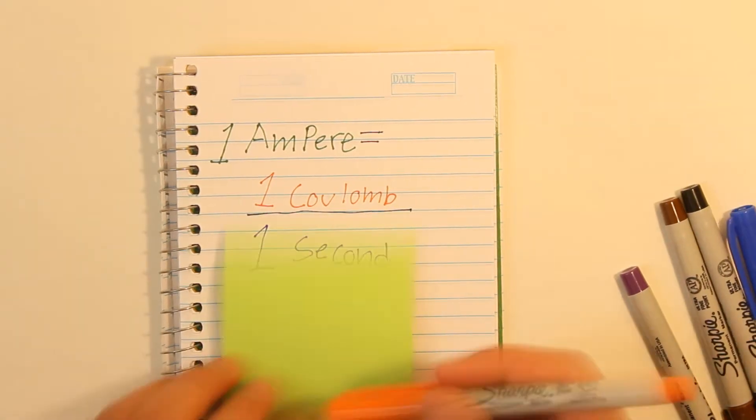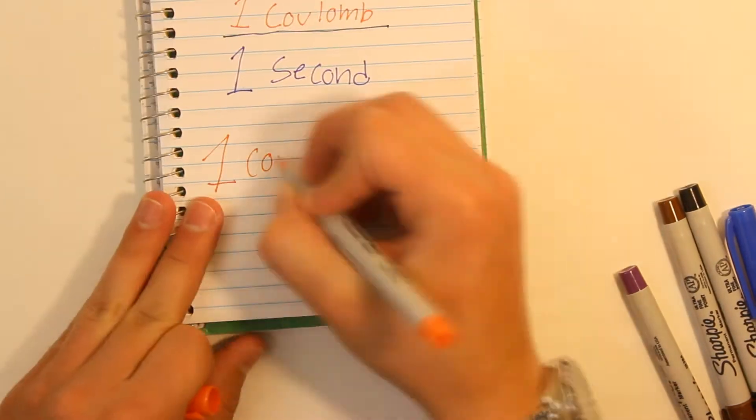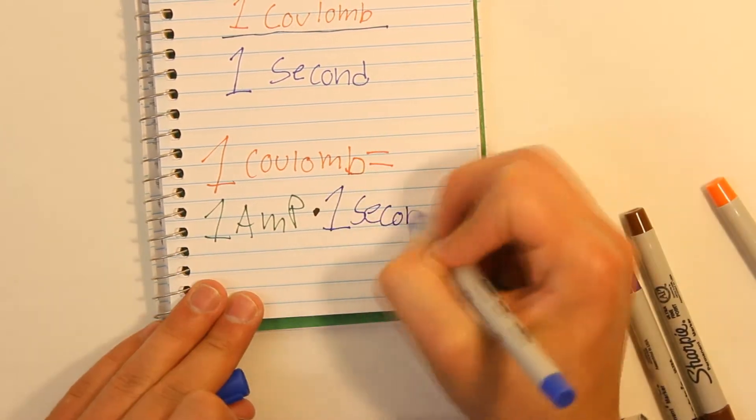That definition does not help very much without knowing what a coulomb is, which is why I'm going to tell you what a coulomb is. A coulomb is the amount of electricity that is transported in one second by a current of one ampere.